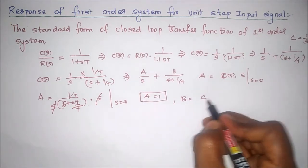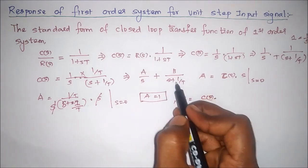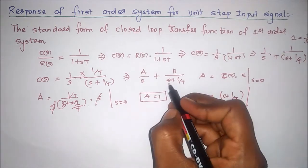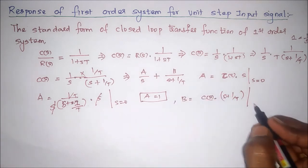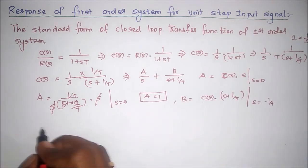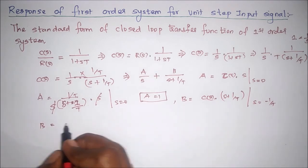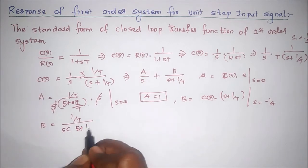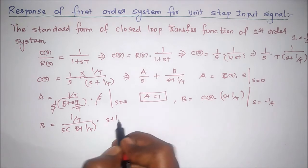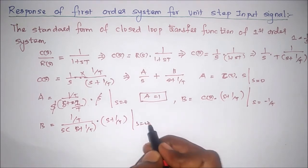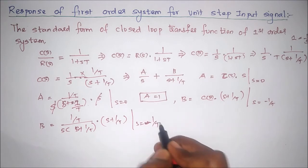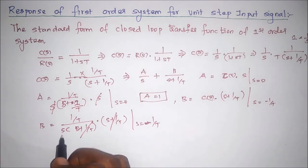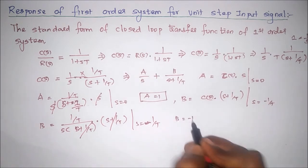Similarly, to calculate B, we multiply C(s) by (s plus 1/T). Setting s plus 1/T equal to 0 gives s equal to minus 1/T. We substitute s equal to minus 1/T into the expression. The (s plus 1/T) terms cancel each other, and substituting minus 1/T for s, we get B equal to minus 1.